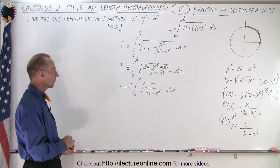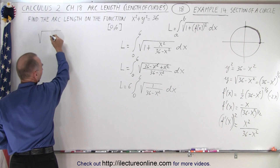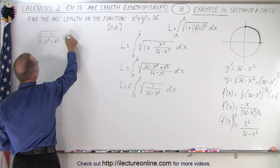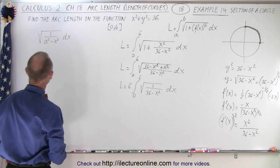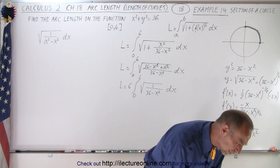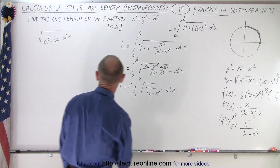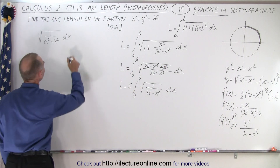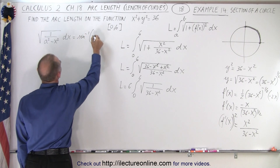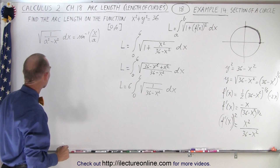Now we need to find this integral. We need something in the format of the integral of 1 over the square root of a squared minus x squared, dx. That evaluates to the inverse sine of x over a. So we're going to apply that same rule here.